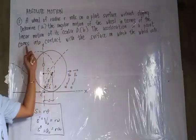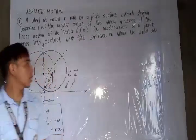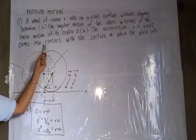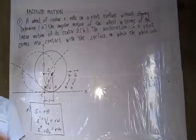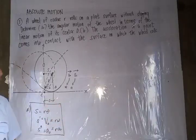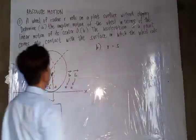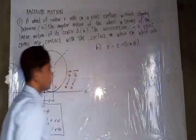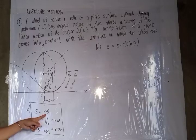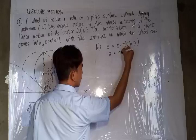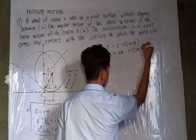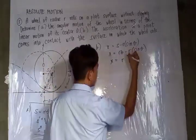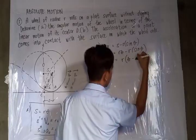For letter B, we have to find the acceleration of the point that comes into contact with the surface on which the wheel rolls. We take the contact along the X axis. So S equals the angular motion minus the radius multiplied by sine theta. And S is also equal to R multiplied by theta. So X equals R times theta minus the radius sine theta. Factoring out R, we get X equals R times (theta minus sine theta).